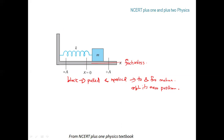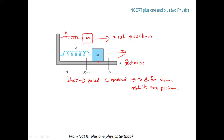If we shift the block from its equilibrium position, initially the block is at the rest position. After a displacement of x from the rest position, the block will oscillate to and fro about the mean position.